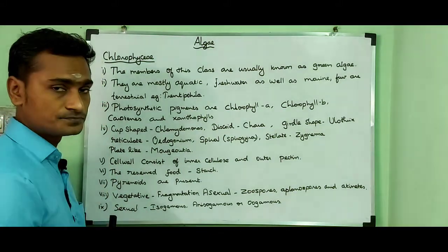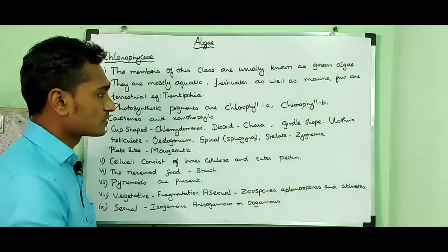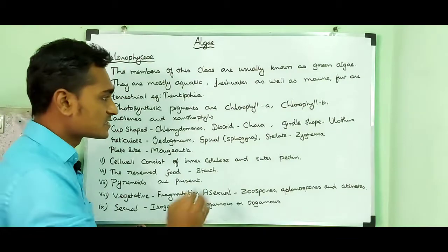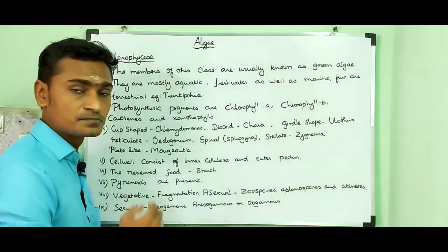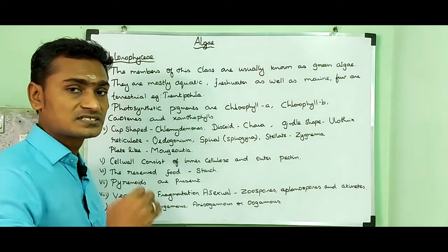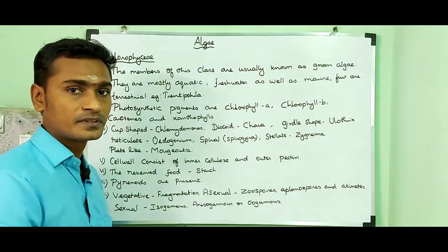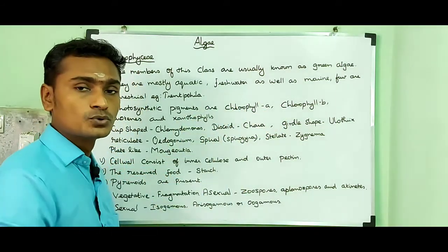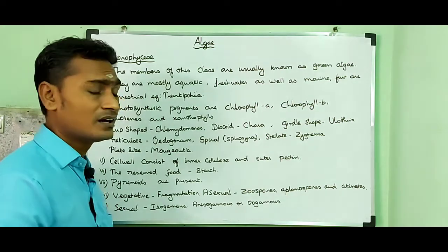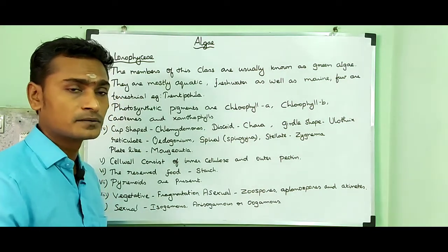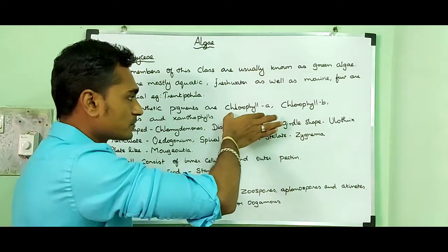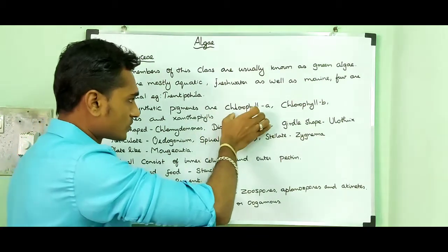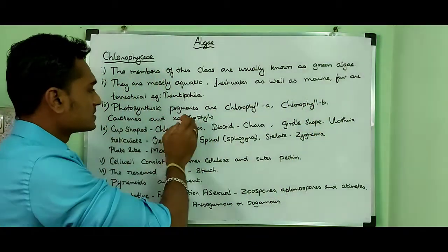The photosynthetic pigments are chlorophyll A, chlorophyll B, carotene and xanthophyll. Chlorophyll A is otherwise called the universal pigment because this pigment is present in all kinds of algae — all classes of algae. So that is why this pigment is mentioned as the universal pigment.